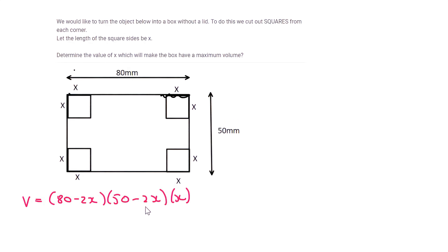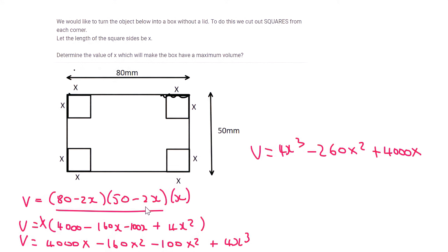Now, we can't really work with that. We need to multiply that out. So I'm going to multiply these two brackets out first. Minus 100x plus 4x squared. I'm going to make that a little larger. Plus 4x squared. And then we've still got x. So I'm just going to put that x in the front. Then you're going to multiply the x in. So it's going to be 4000x minus 160x squared minus 100x squared plus 4x cubed. We're then going to simplify. I'm just going to put the x cubed in the front. It's going to become minus 260x squared plus 4000x. So there we go. Now, that is volume.